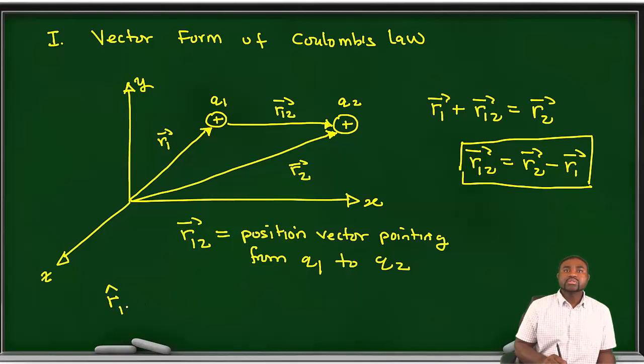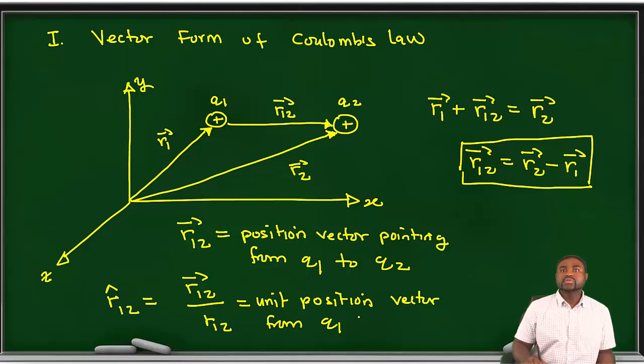R12 hat is equal to R12 bar divided by R12. This represents a unit position vector from Q1 to Q2.